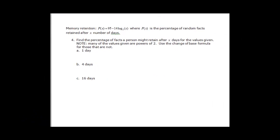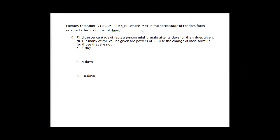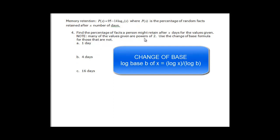One last problem. Memory retention. So again we have a log function. p of x is the percentage of random facts retained after x number of days. It says find the percentage of facts a person might retain after x days for the given value. Many of the values given are powers of 2. Notice it is a log base 2. Then we need to change the base on that. We have log base 2 of x and that would be equal to the log of the argument which is x over the log of 2. So anytime I see log base 2 of x I can just replace it with log x over log 2.